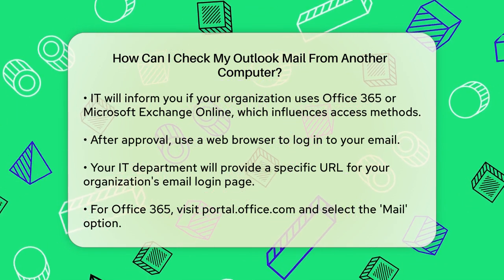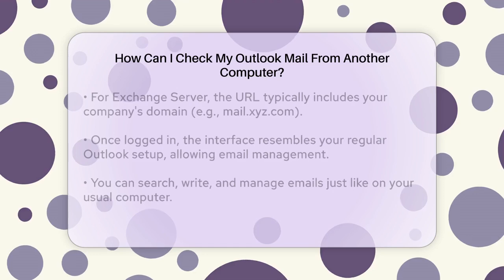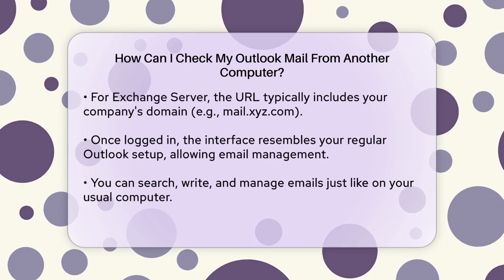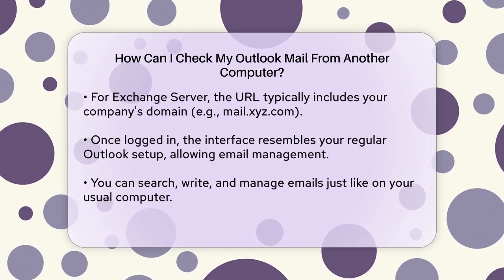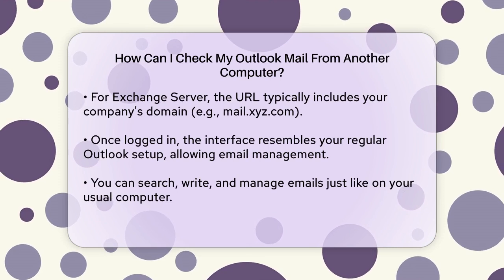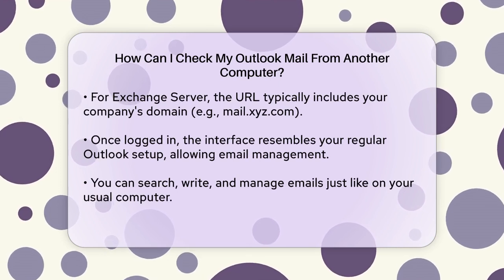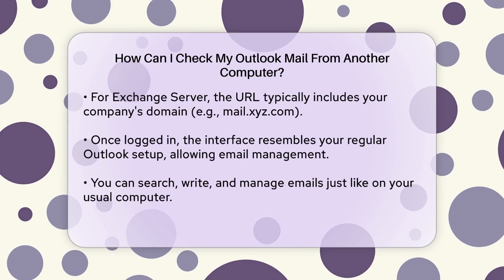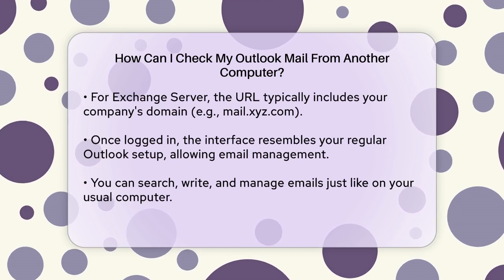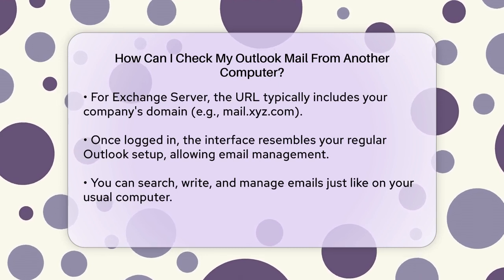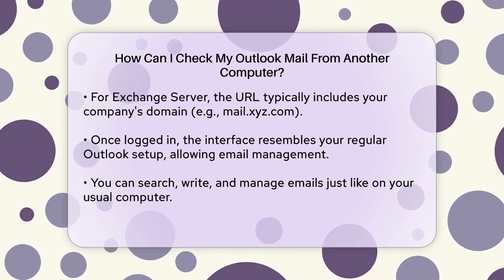You can search for emails, write new emails, and manage your inbox as usual. Another option is to use the Outlook Web App directly, often abbreviated as OWA. To access OWA, you would type in a URL like https://mail.yourcompany.com/owa — replace your company's domain accordingly. Make sure to include the S in HTTPS for a secure connection.